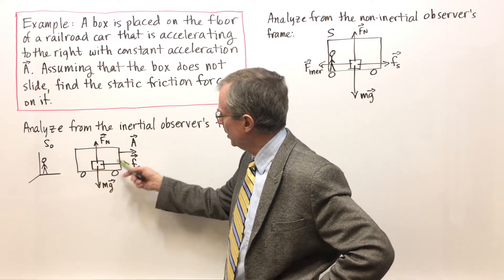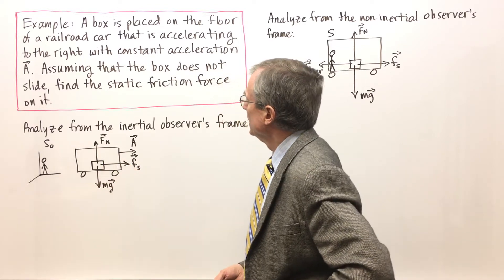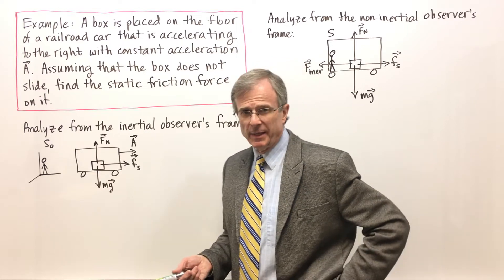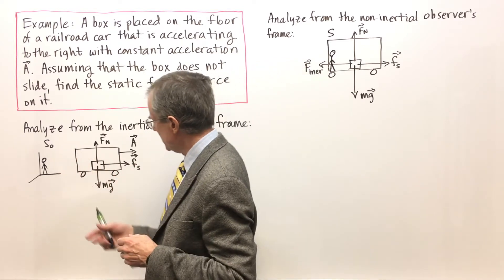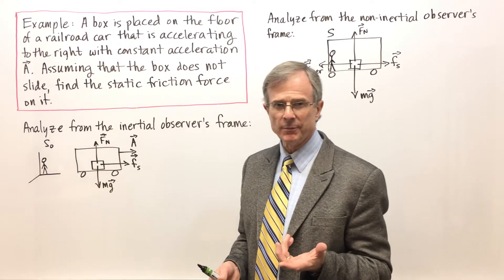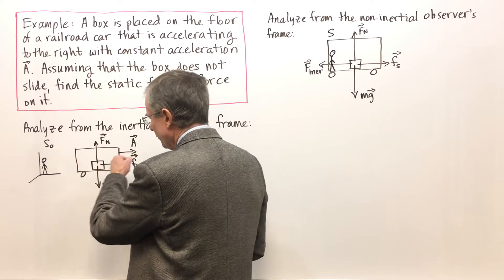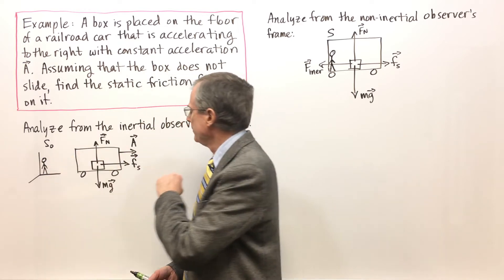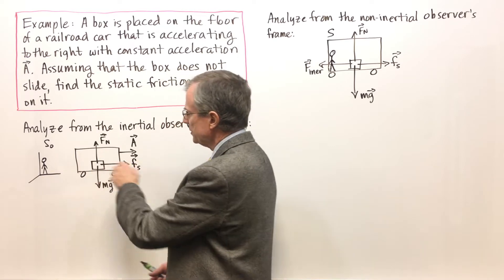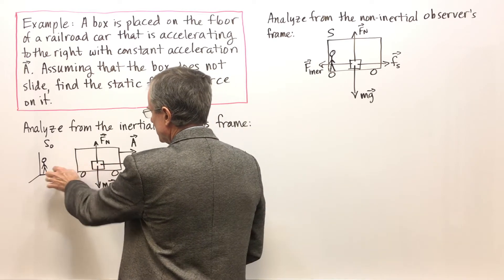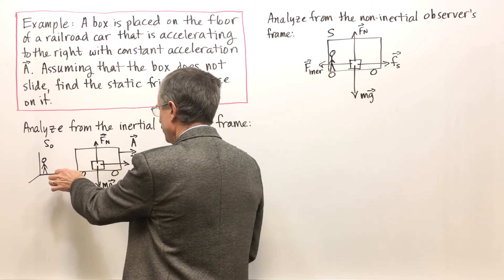So here's the railroad car, here's the box on the floor of the car. Let's assume that the box doesn't slide but this car is accelerating to the right and there's got to be a static friction force on that box to prevent it from sliding. From the point of view of an observer within the railroad car it would slide back.